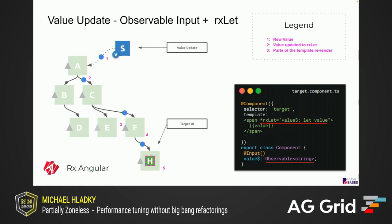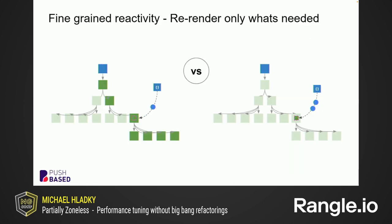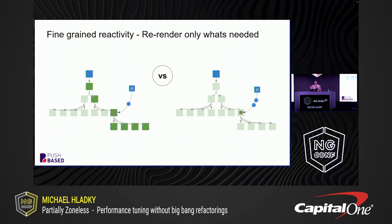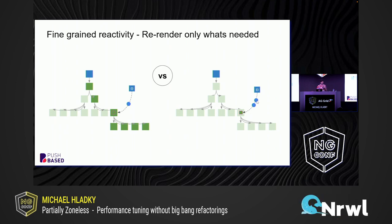We took it one step further and introduced a structural directive. With structural directives we are able to update only one specific HTML snippet in your whole component template. This is the smallest piece of work you can reduce your change detection to, and it is the most performant way we have figured out so far. If you compare it to an application with change detection on push and the async pipe, you see a drastic difference. The two circles on the right mean we also handle multiple synchronous changes in a row in a very performant way.